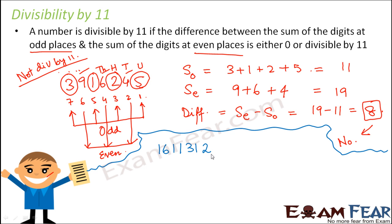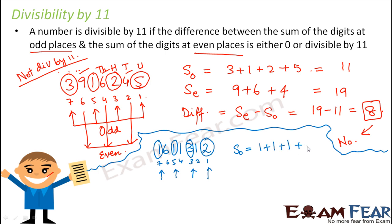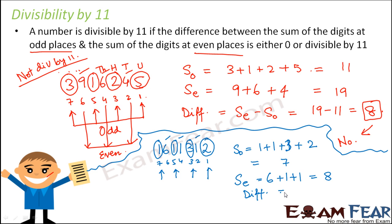Let us first find out the digits at the odd and even places. We number the places 1, 2, 3, 4, 5, 6, 7. The digits at the odd places are 1, 1, 3 and 2. So the sum of the digits in odd places is 1 plus 1 plus 3 plus 2, which comes out to be 7. The sum of the digits at the even places is 6, 1, 1, that is 6 plus 1 plus 1 which equals 8. The difference SE minus SO is 8 minus 7, which equals 1. This 1 is not divisible by 11, therefore the number is not divisible by 11.